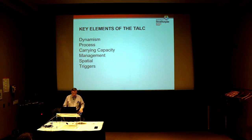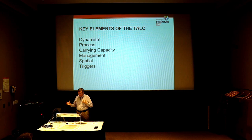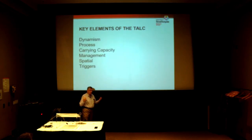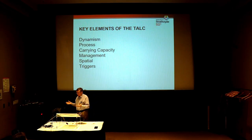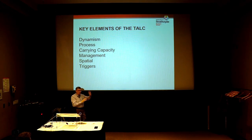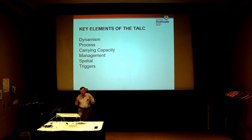We're 42 years on from when the model appeared in its final published form, so what's important about it now — why is it still relevant? There were several key elements in it. Being partly trained as a historian, I like to periodize things. The six things I'll talk about are: dynamism, process, carrying capacity, management, spatial aspects, and triggers.